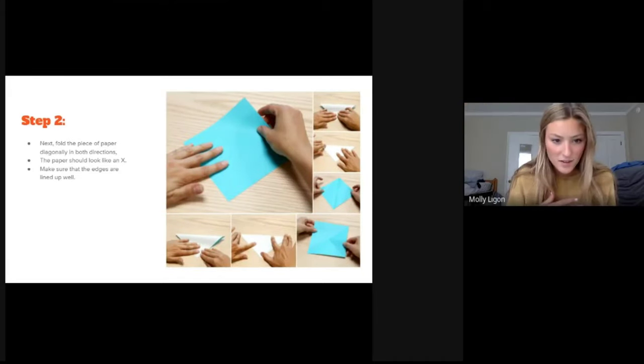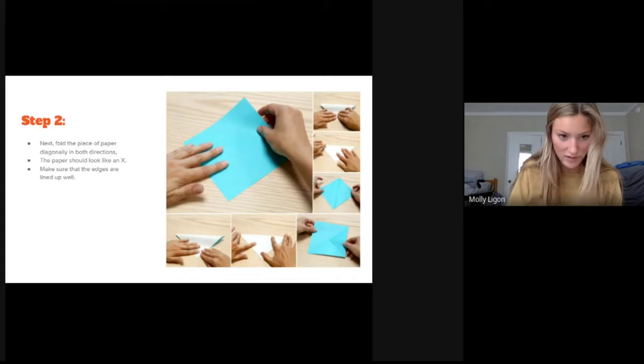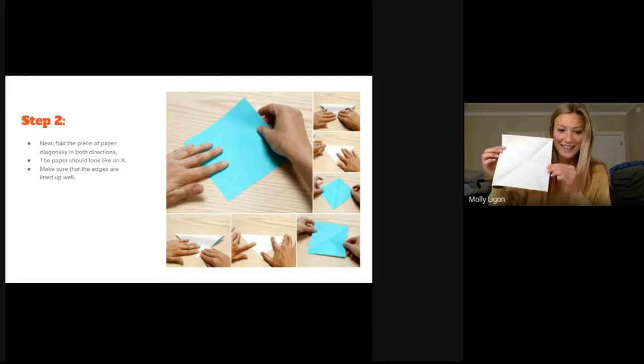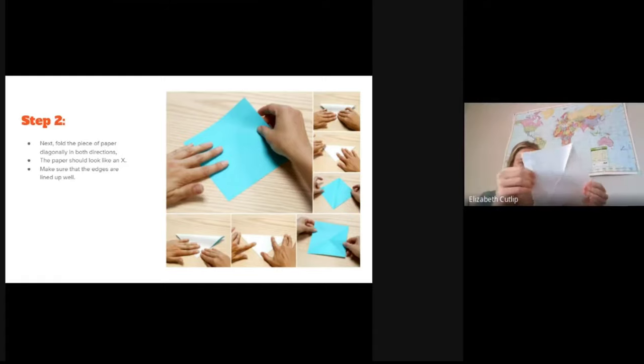Okay, so we're going to start by taking the piece of paper and folding it diagonally in both directions and it should look like an X. And make sure that the edges are lined up very well. Like this, you can kind of see the X.